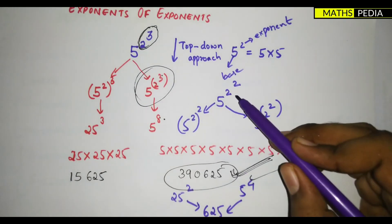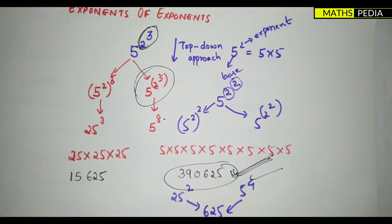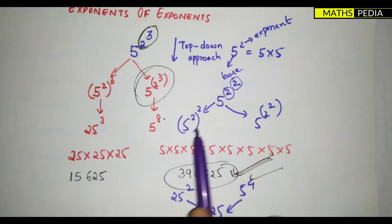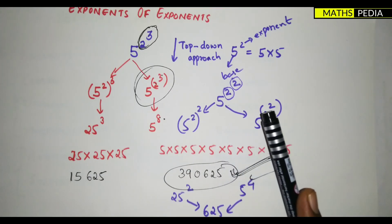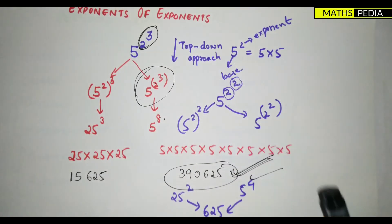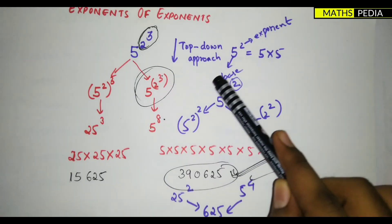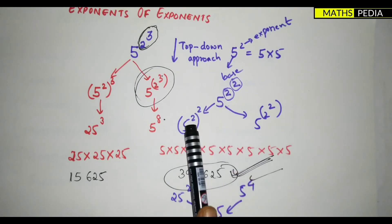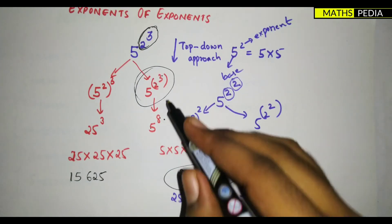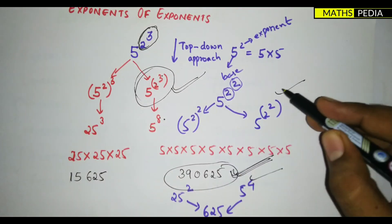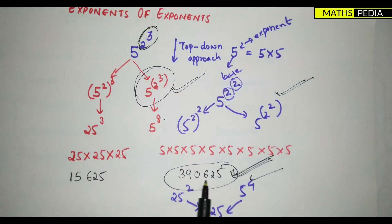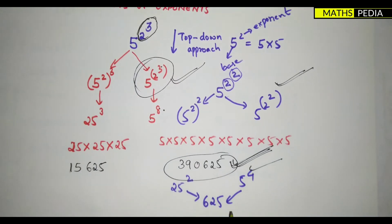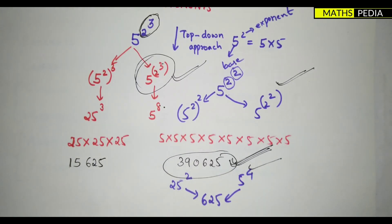This is an interesting fact: whenever the exponent tower is 2 to the power 2, both methods give the same answer. But remember, it is always better to go by the top-down approach — that is the best and exact method. In general the two methods give different answers, but in this special case they happen to be the same.